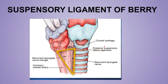This ligament is mainly attached to the cricoid cartilage. Remember, the suspensory ligament of Berry is on either side of the thyroid gland, and the thickened part of the capsule is also involved. It is mainly attached to the cricoid cartilage, but it also extends to the thyroid cartilage as well.